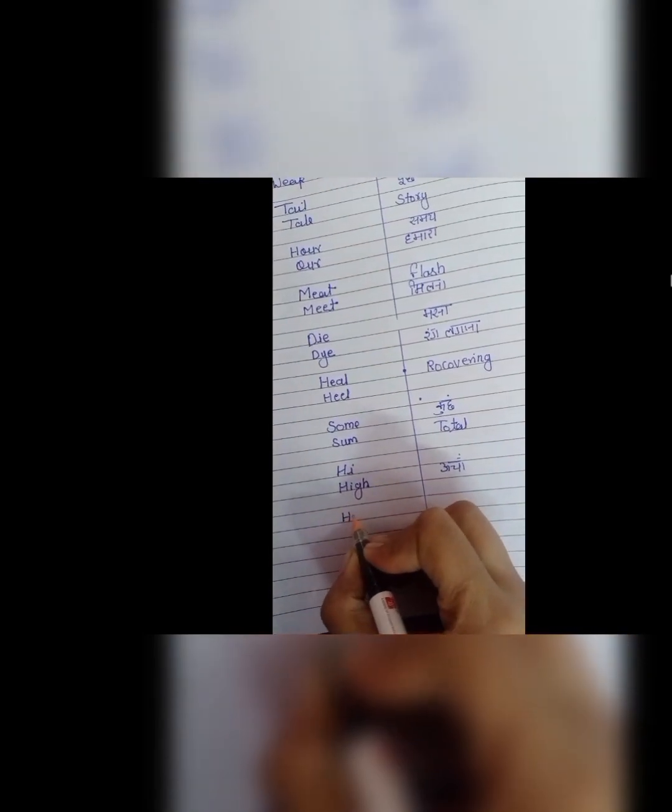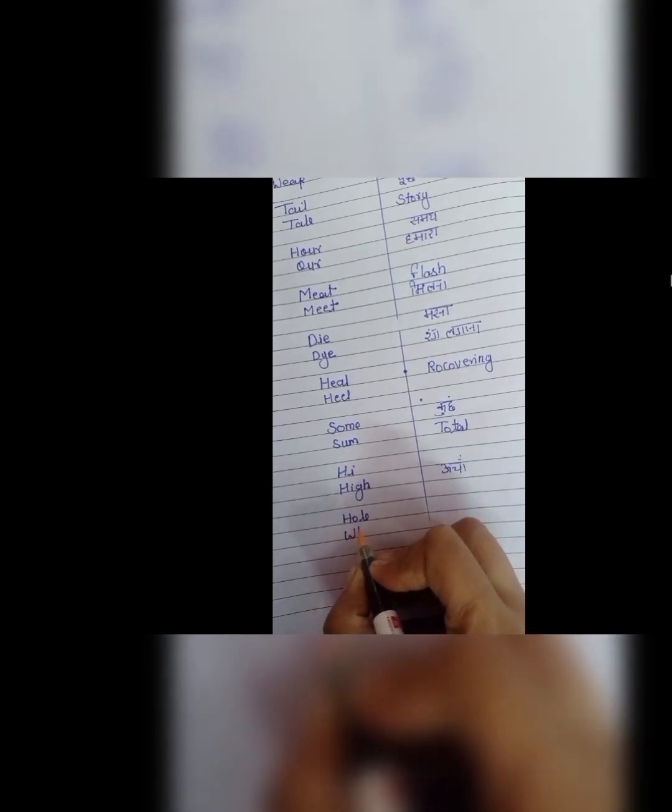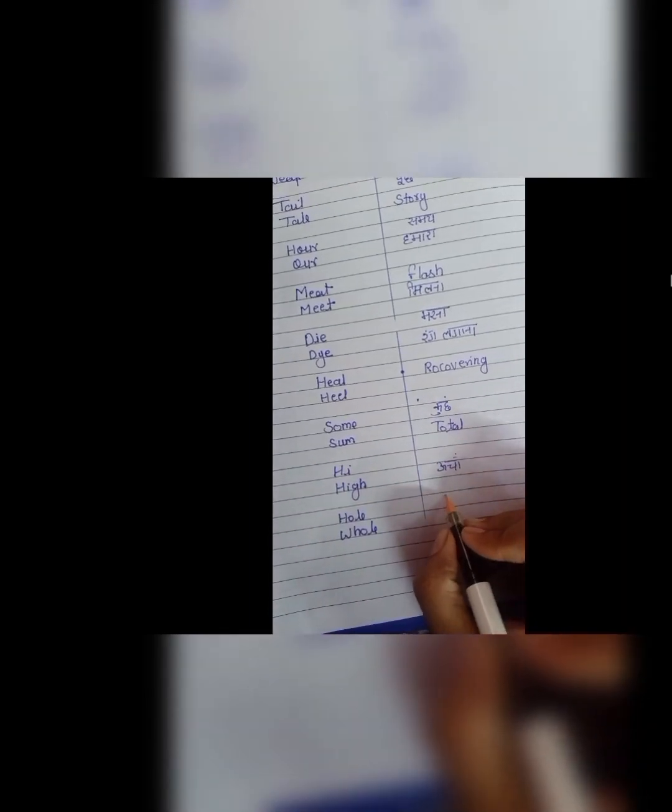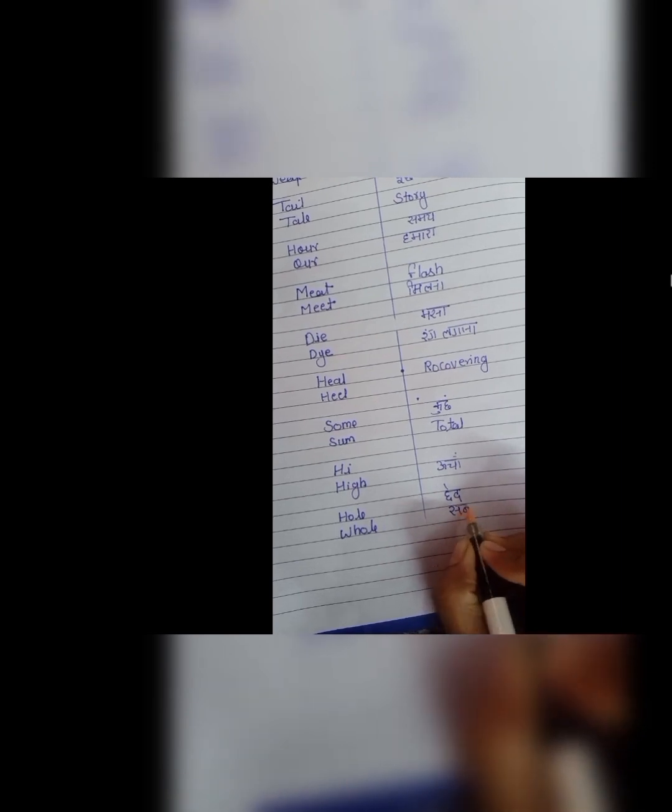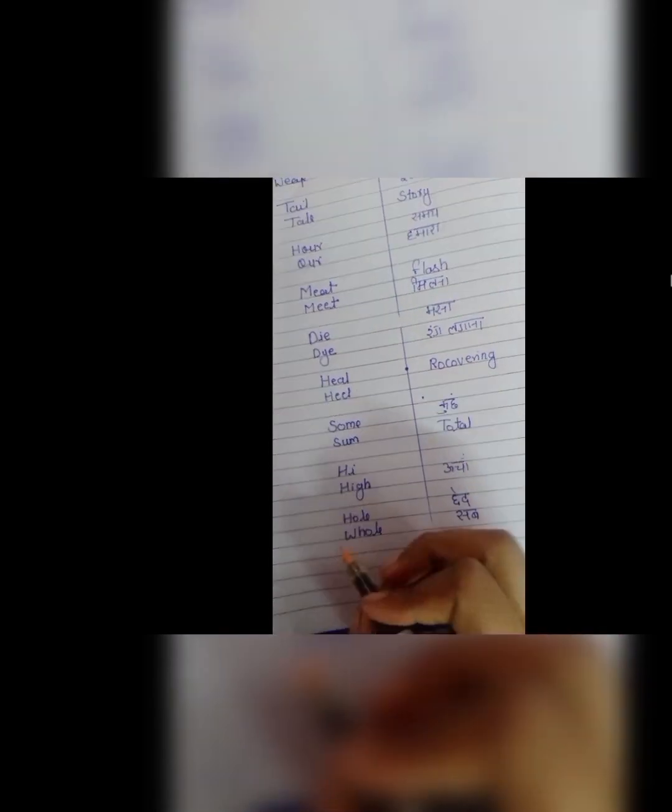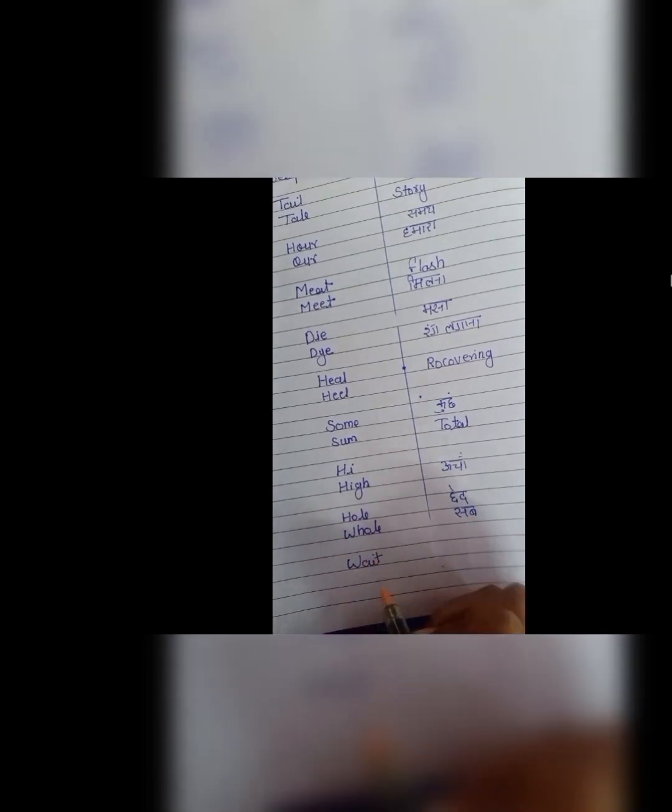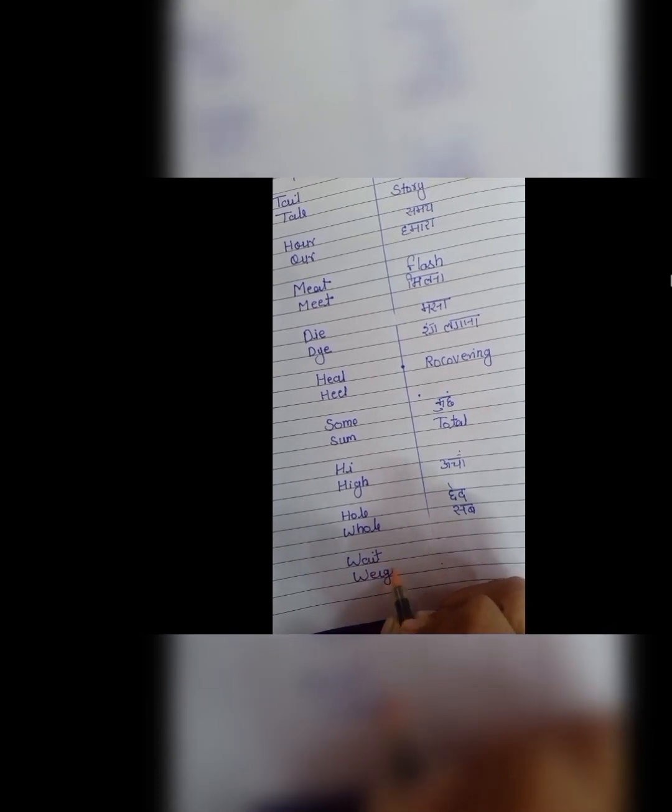Next is hole and whole. H, O, L, E, hole. Iska meaning hoota hai chhhed. H, O, L, E, hole. Chhhed matlab kisi chiz me ka koi chhhed hai. There are many holes in this cloth. And W, H, O, L, E, whole means sab. I have to complete my whole work.